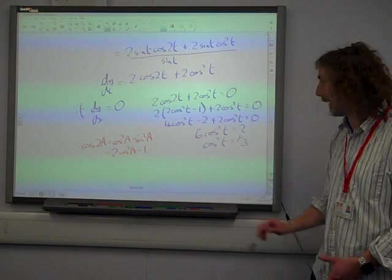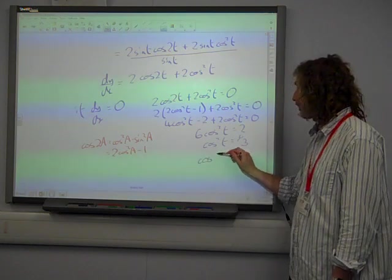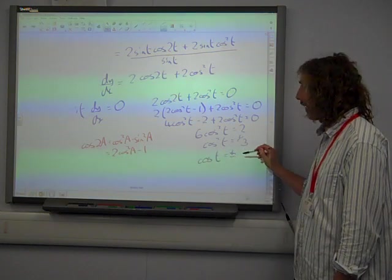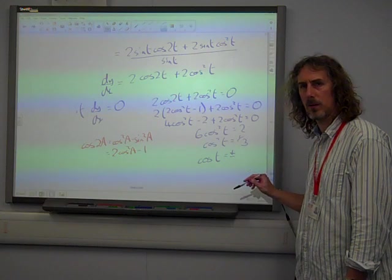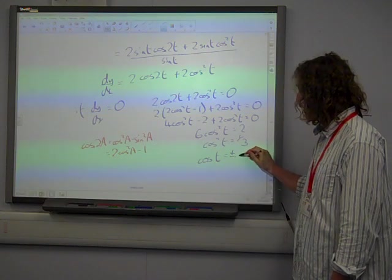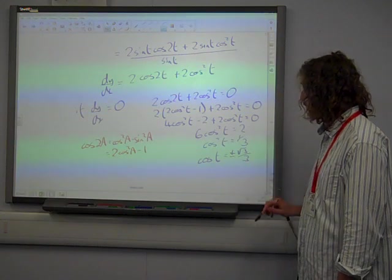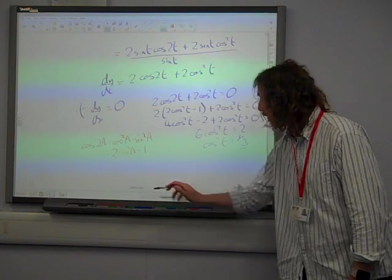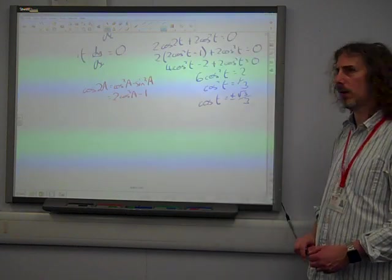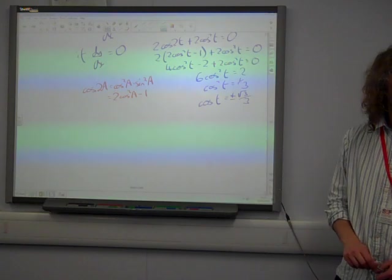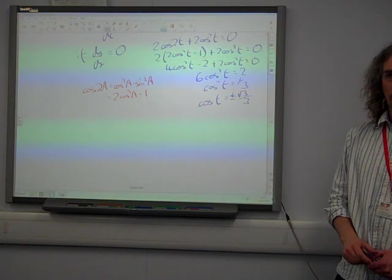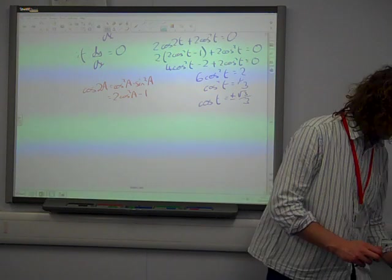And so we've got cos t is plus or minus the square root of a third, which is root 3 over 3. Is that right? Yes.